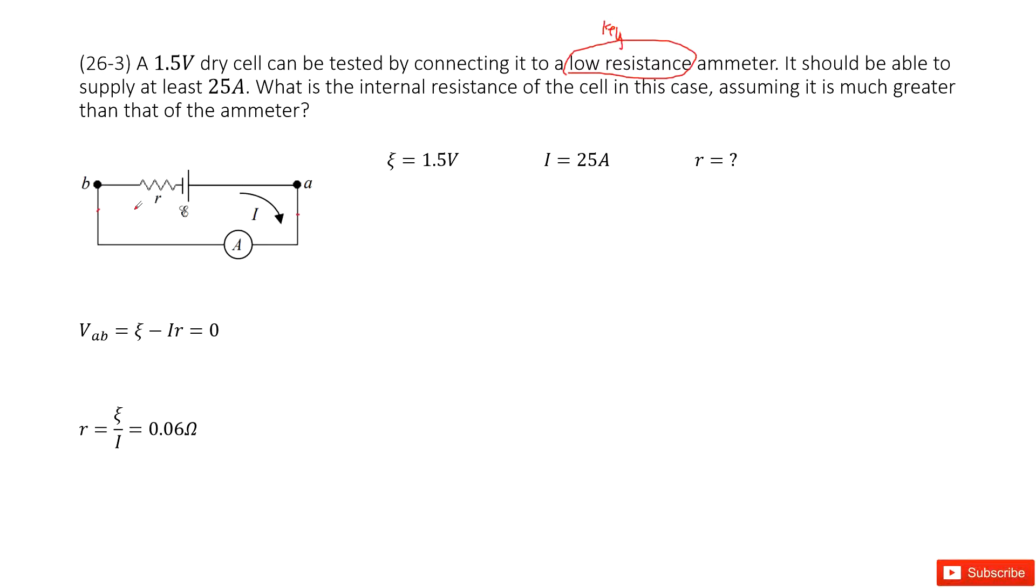Do you agree? It's zero. So the terminal voltage for this battery is zero. So V_AB equals zero, right.